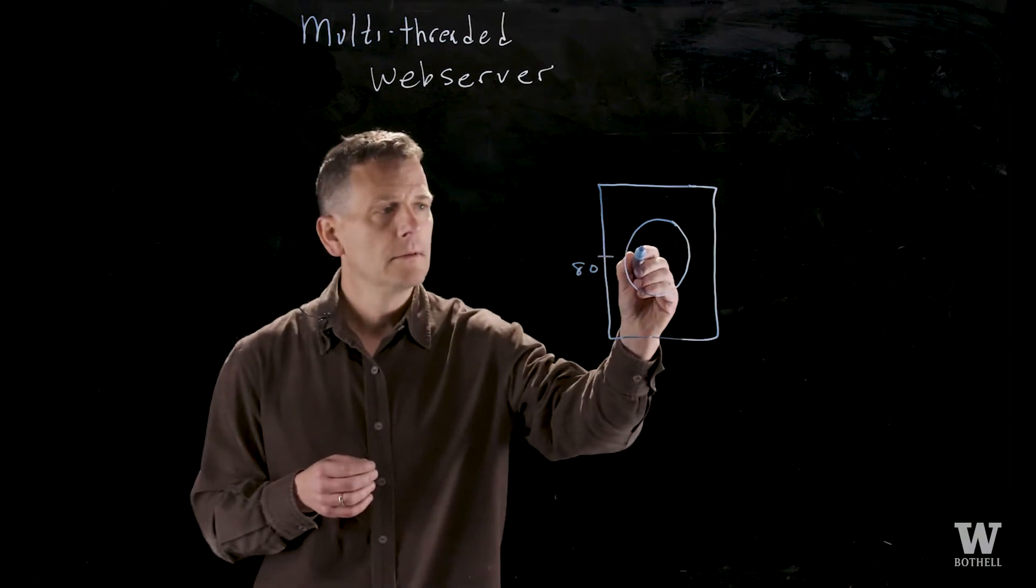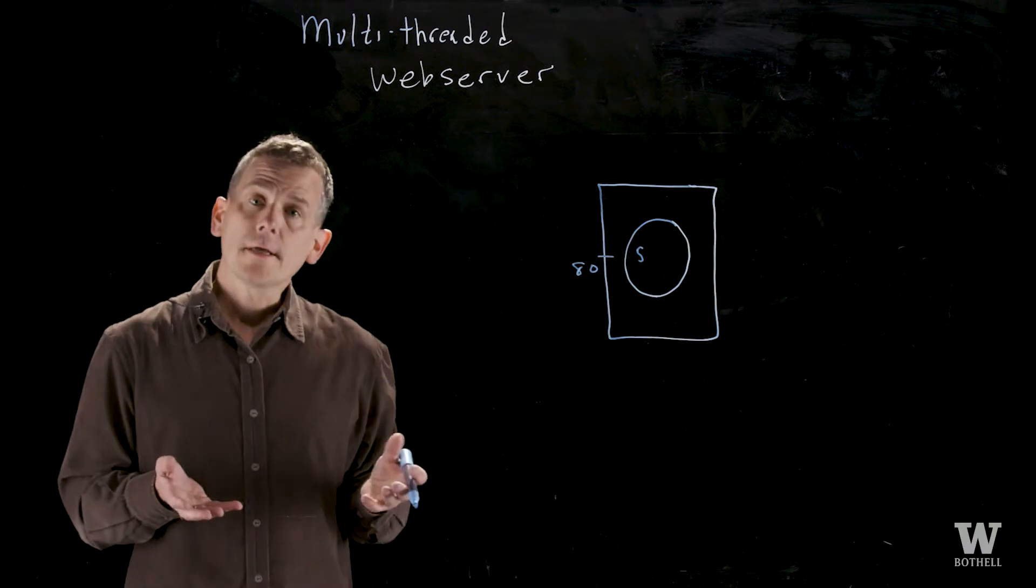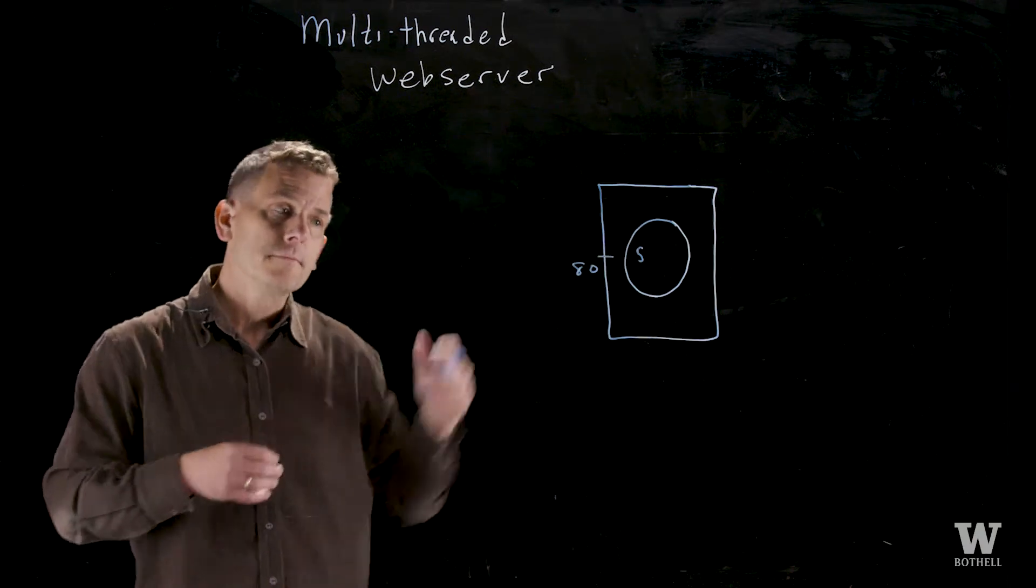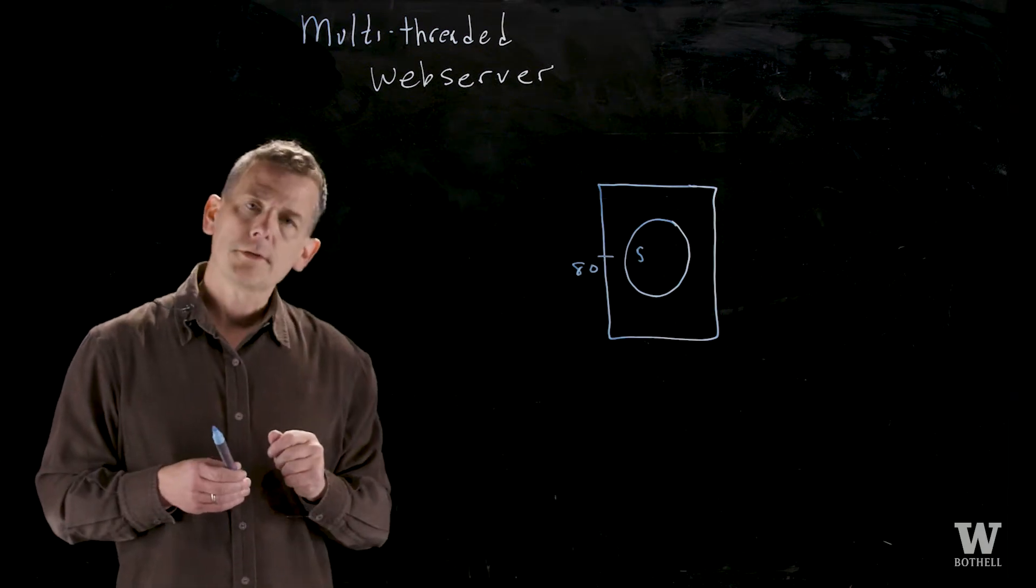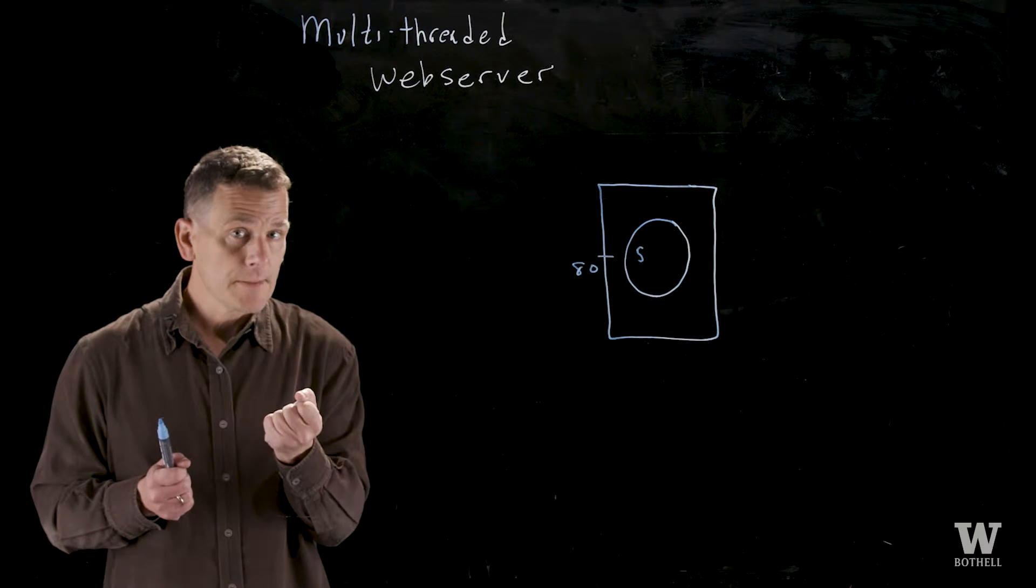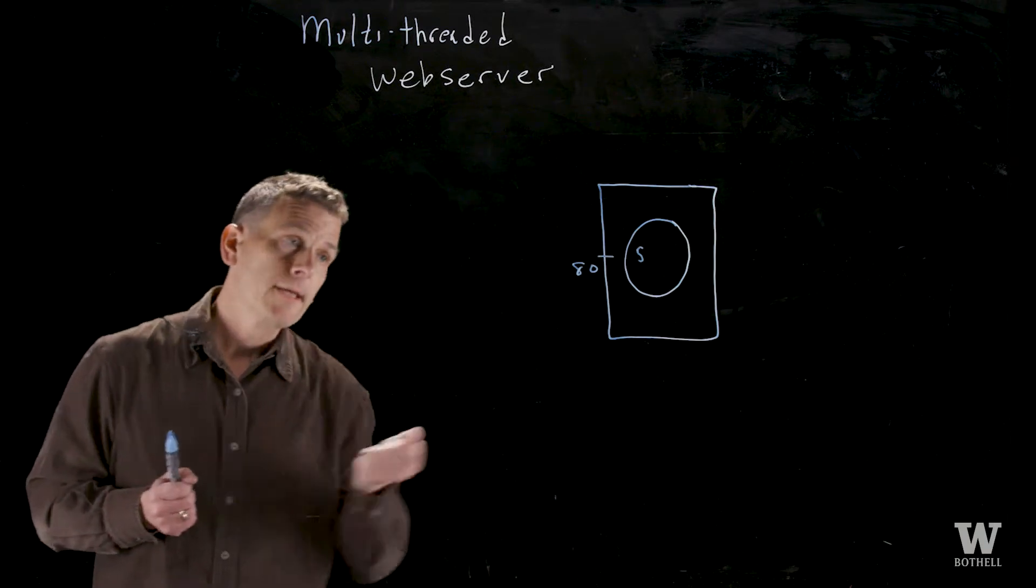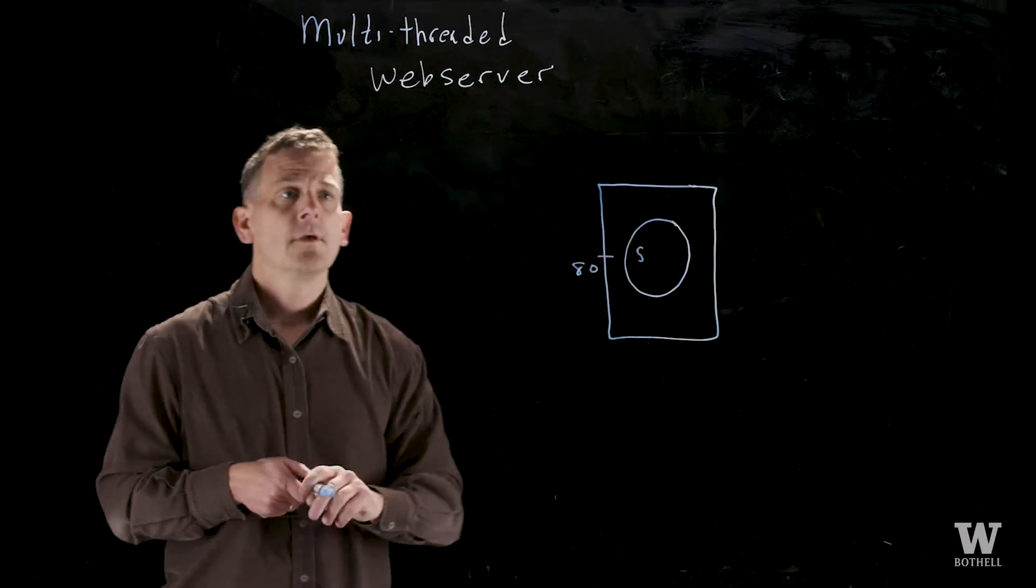There's a single thread, and I'll draw the thread as a squiggly, that listens on that connection and then dispatches the work to a background thread. So this thread's only job is to listen until somebody connects. When somebody connects, it takes that TCP port, I'm sorry, it takes that TCP IP socket and hands it back to another thread to actually service the socket itself. So let's draw that.